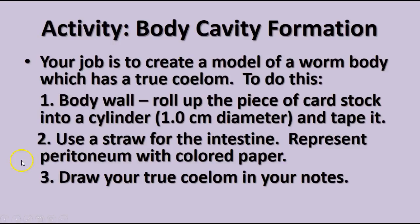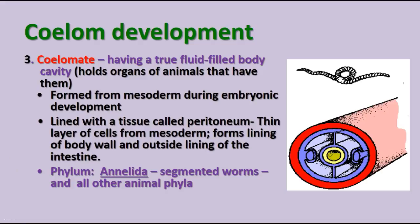The third level of development is called a coelomate, or having a true coelom. This is found in segmented worms like annelids, mollusks, arthropods, echinoderms such as starfish-like animals, and chordates which includes humans. The coelom is the true body cavity — a cavity formed between and within layers of the mesoderm during embryonic development. It's lined with a tissue called peritoneum, a thin layer of cells from the mesoderm that forms the lining of the body wall and the outside lining of the intestine. This is first found in phylum Annelida, and all other phyla after that share the same body plan.